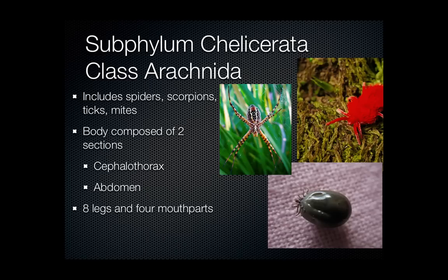When we're looking at arachnids, one trait you should have noticed when you watched those videos is that their body is composed of two sections. Those two sections are the cephalothorax and the abdomen. The cephalothorax is that fused head and middle region of the body, and then the abdomen is that second part of their body, which you might even think of as like a tail. Another trait they share in common is the fact that they have eight legs and four mouthparts.